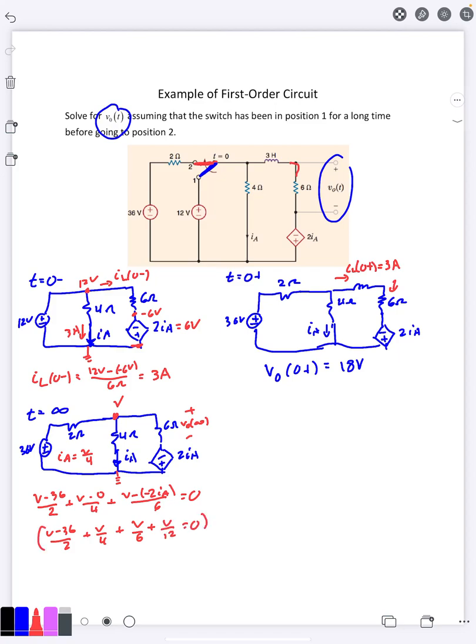Go ahead and multiply everything through by 12 here. That's going to give me a 6V minus 216 plus 3V plus 2V plus V equals 0. So 3, 6, that's going to be 12V is 216. And if we go ahead and divide that there, we're going to get 18 volts.